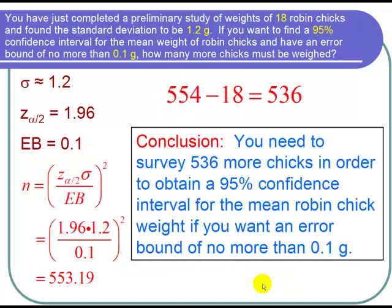And now we can state our conclusion. We need to survey 536 more chicks in order to obtain a 95% confidence interval for the mean robin chick weight if you want an error bound of no more than 0.1 grams. And I'm done with the problem.